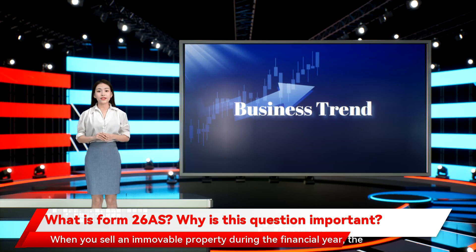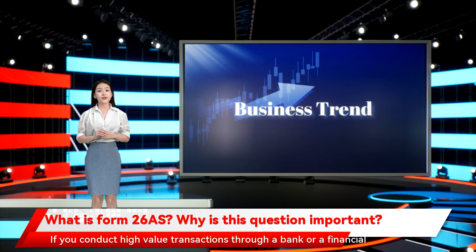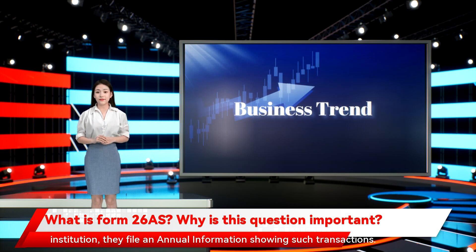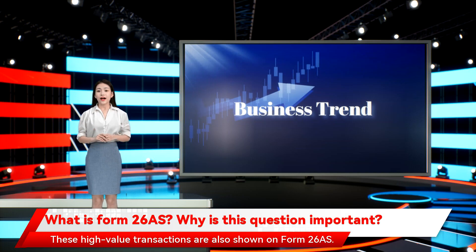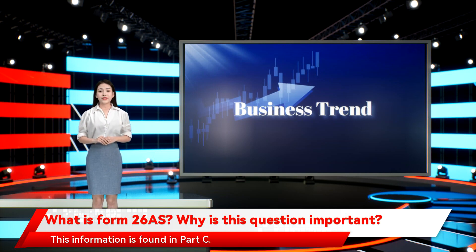When you sell an immovable property during the financial year, the buyer pays you the money after deducting the relevant TDS. Any such TDS on sale of property is available on Form 26AS in Part A2. If you conduct high-value transactions through a bank or financial institution, they file an annual information showing such transactions, which are also shown on Form 26AS. Advanced tax or self-assessment tax paid by you during the financial year is found in Part C.